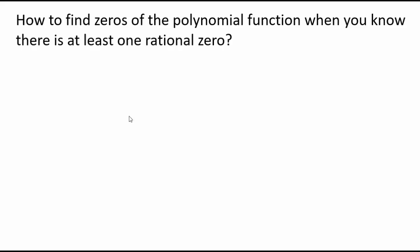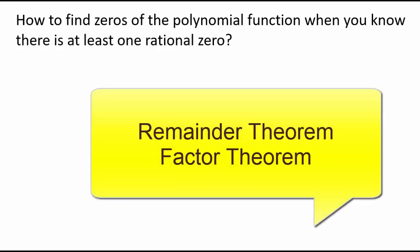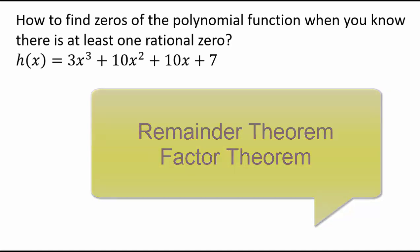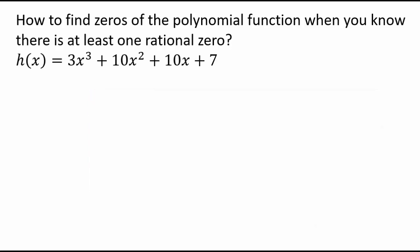Let's talk about how to find zeros of a polynomial if you know there's at least one rational zero and you are not able to factor. We can use all the things we've studied so far, like our remainder theorem and factor theorem, and that will help us. So let's take an example. Here's our function h of x: 3x cubed plus 10x squared plus 10x plus 7. Now that you have this polynomial and we're not able to factor, and you are told that it has at least one rational zero — how should we start?